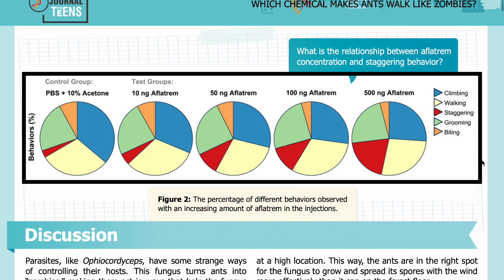Then, from left to right, you can see the test groups in order of aflatrem concentration: 10 nanograms, 50 nanograms, 100 nanograms, and 500 nanograms on the far right.